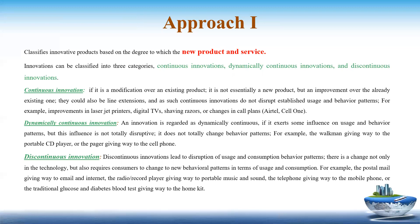The second is dynamically continuous innovation. It involves new products that have evolved from existing products, such as electric shavers, electric toothbrushes, electric typewriters, and automatic wristwatches. This type of innovation exerts some influence on usage or behavior patterns, but this influence is not totally disruptive — it does not completely change behavioral patterns. There must be a greater influence on usage and behavior than in continuous innovation, but it is not completely disruptive. For example, the Walkman giving way to portable CD players, or the pager giving way to cell phones.